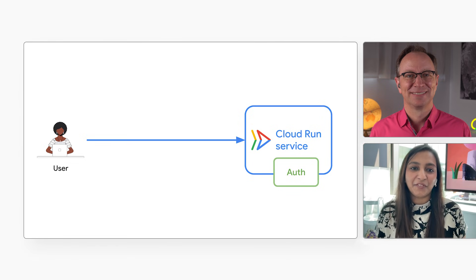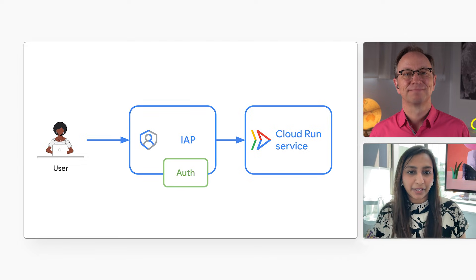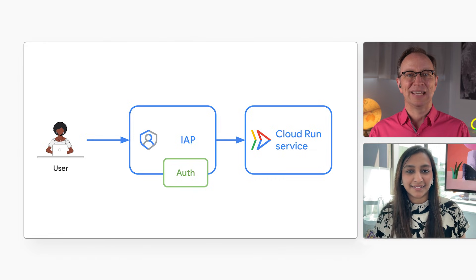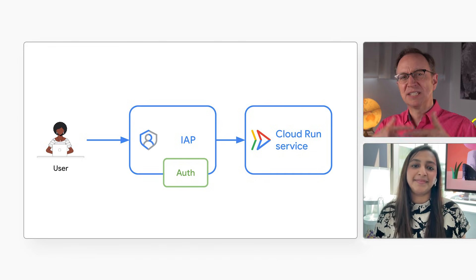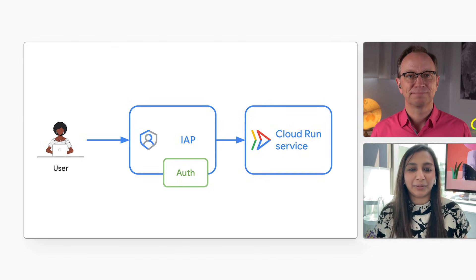I've shot a couple of videos about Identity Aware Proxy before. It's a very useful product. If you put IAP in front of your Cloud Run service, you don't have to worry about authentication in your application code. Your application will be more secure and less complex. But many people have asked me in the YouTube comments if there is a simpler way to set it up. There is now. Let me show you how.